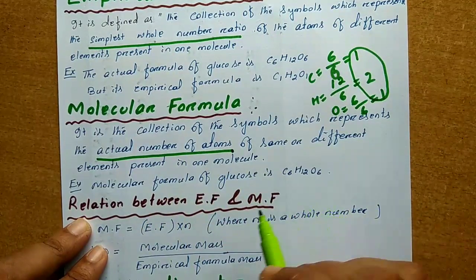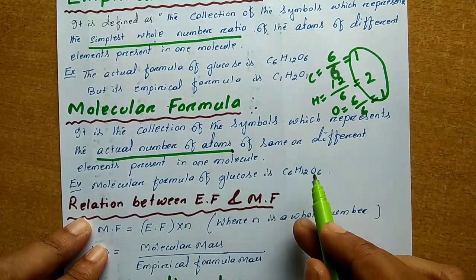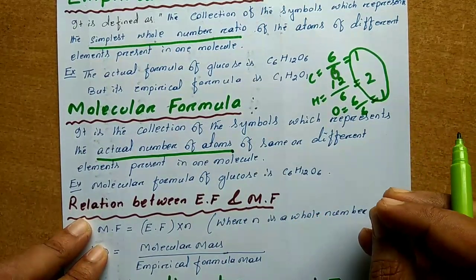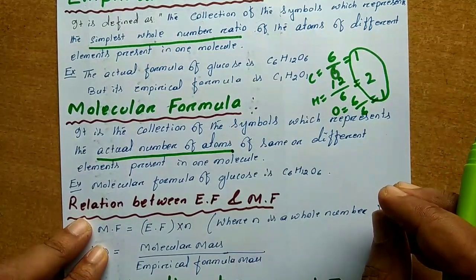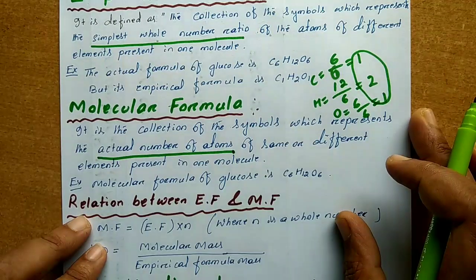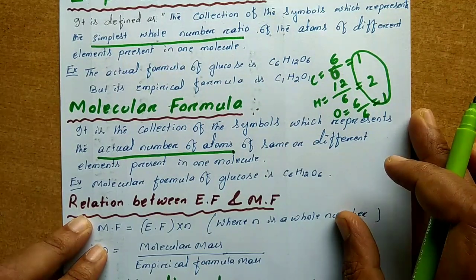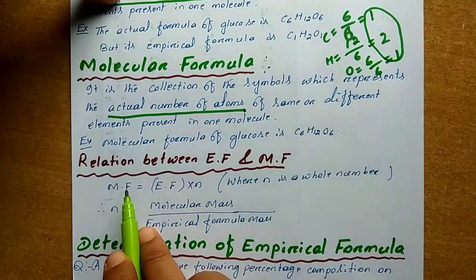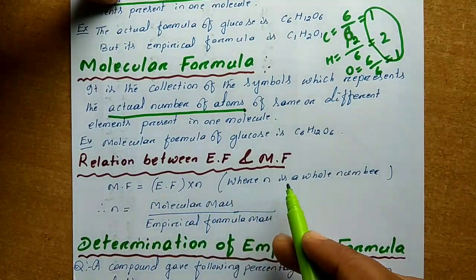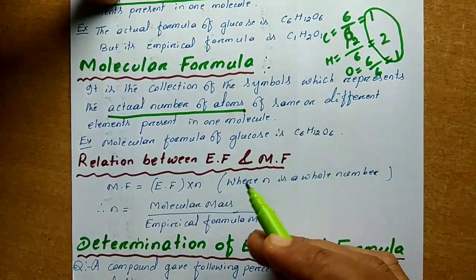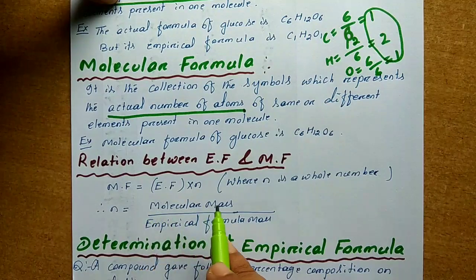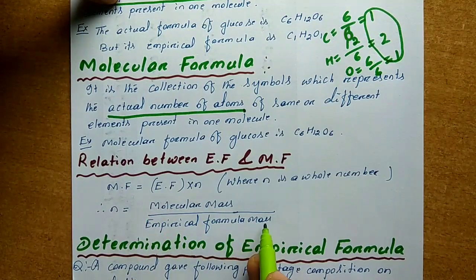We can take the same example. The molecular formula of glucose is C6H12O6, meaning it originally contains 6 carbons, 12 hydrogens, and 6 oxygens — there is nothing to change. That means the original formula of the compound is known as the molecular formula. So: molecular formula equals empirical formula multiplied by n, where n is a whole number determined by dividing molecular mass by empirical formula mass.